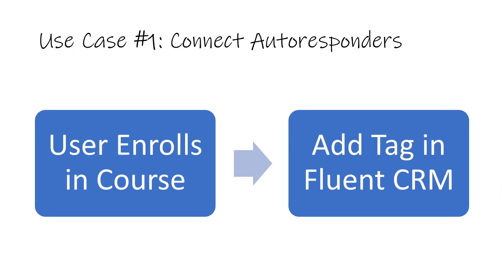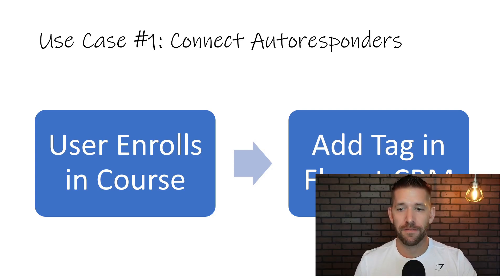This is going to be very similar to an 'if this then that,' or a Zapier, or an Integrately — any of those automation-type tools that have been around for a long time. But let me show you some really special use cases I have jotted down. Use case number one is pretty simple: it's simply to connect autoresponders.